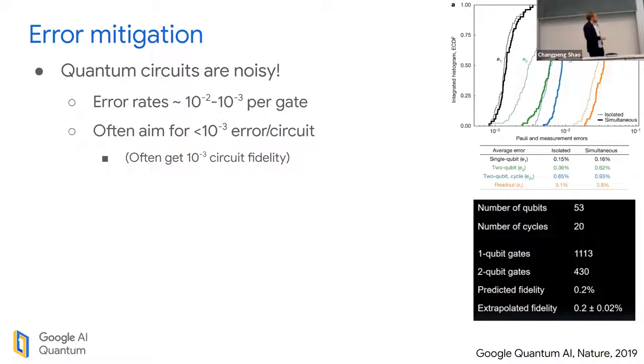The other problem we have with quantum computing is that classical computers have about an 80-year head start. In order to beat classical competition in material science and chemistry, you've often got to aim for 10^-3 error in estimating expectation value. That's six orders of magnitude to get past.